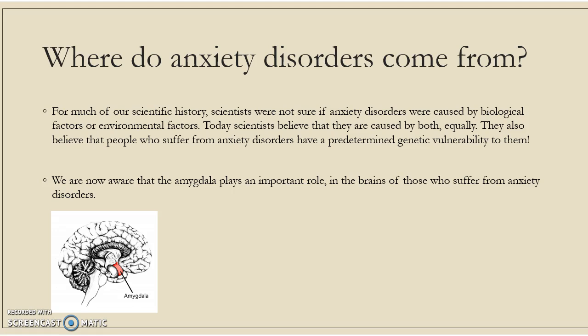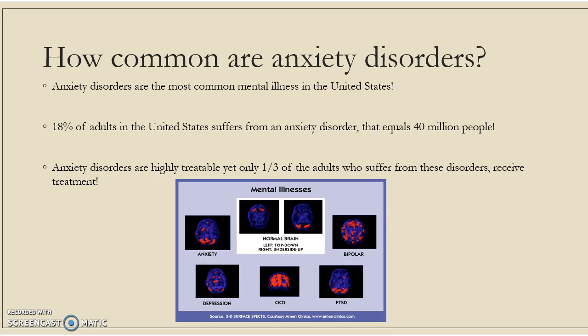Now that you understand where anxiety disorders come from, let's talk about how common they are. Anxiety disorders are the most common mental illness in the United States. 18% of adults in the United States suffer from an anxiety disorder. That may not sound like a lot, but that percentage equals 40 million people. Although anxiety disorders are highly treatable, only a third of the adults in the United States who suffer from these disorders actually receive treatment.